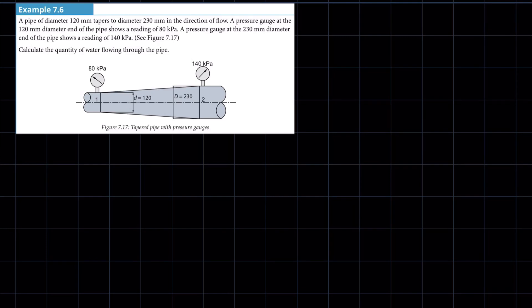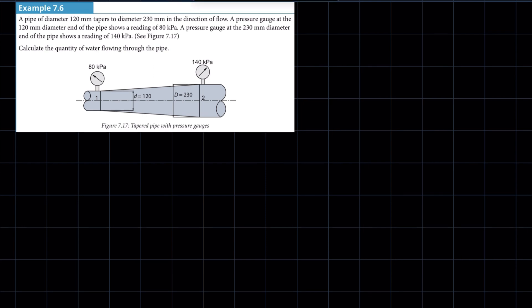Hello everyone, the native god here. We're going to look at a problem where we make use of the continuity equation — when and how we can use it. The problem reads: a pipe of diameter 120 millimeters tapers to a diameter of 230 millimeters in the direction of flow. As the pipe tapers, the entry of water is on the smaller section and the exit is on the bigger section — hence section one at entry and section two at exit.